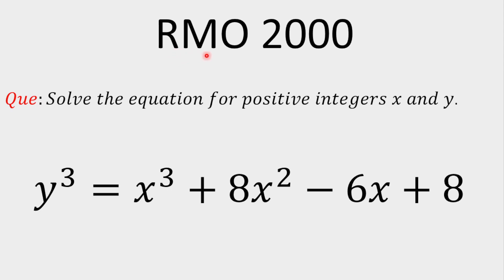Hello everyone. In today's lecture I am going to solve a Regional Mathematical Olympiad problem which was asked in the year 2000. The question is: we have to find the positive integers x and y satisfying the equation y³ = x³ + 8x² - 6x + 8. I am going to show you how to solve this question within two minutes in the next slides. So let's start.